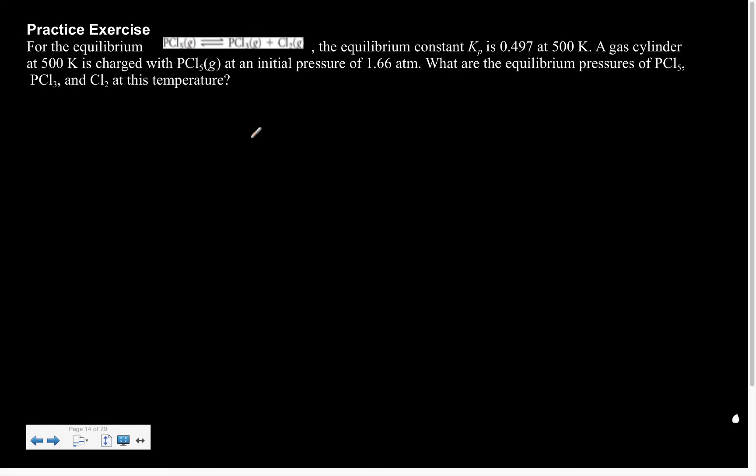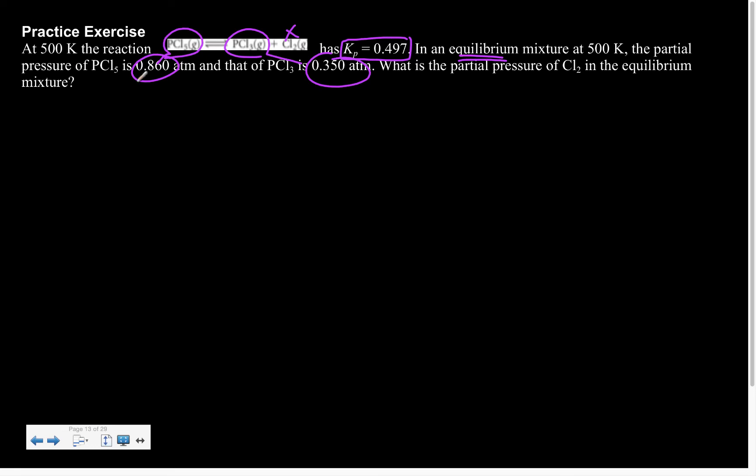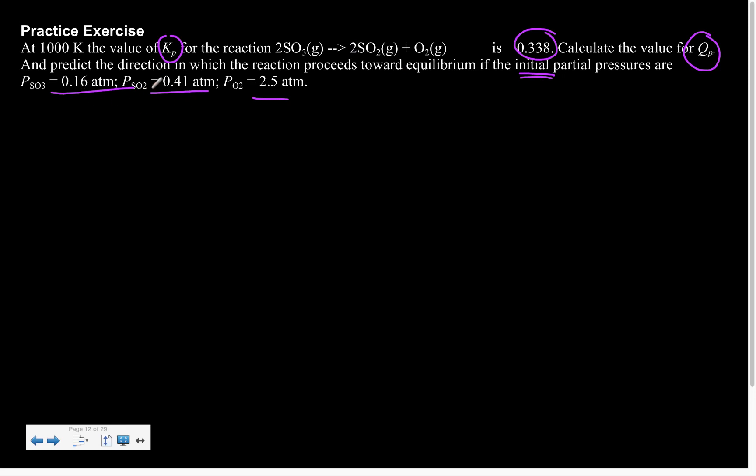Next up, that says for the equilibrium blah, the equilibrium constant is this. A gas cylinder at 500 is charged with PCl5 and an initial pressure of this. And I want to know my equilibrium pressures of everybody else. So here, we are monitoring change. Whereas here, there's no change. We're already at equilibrium and we want to know the last piece.